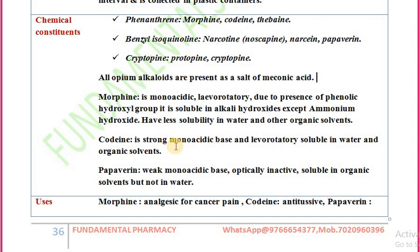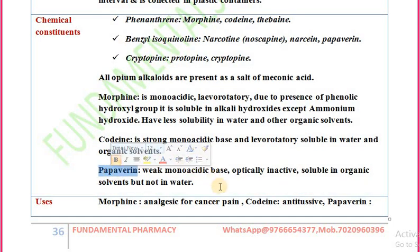Codeine is a strong monoacidic base; it is levo-rotatory and soluble in water and organic solvents. Papaverine is a weak monoacidic base which is optically inactive and soluble in organic solvents. Remember: out of morphine, codeine, thebaine, and papaverine, papaverine is the only one that is optically inactive.